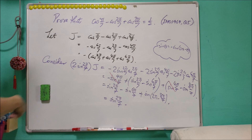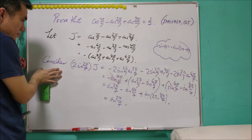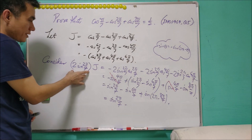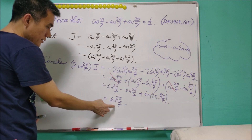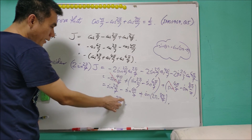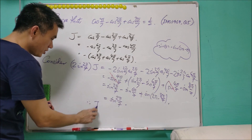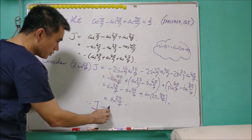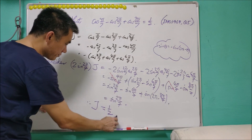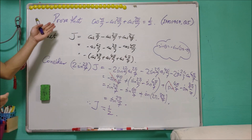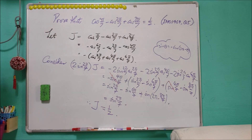So what we have is 2sin(2π/7)·J equals sin(2π/7). Therefore J equals one half. We have proved the statement.